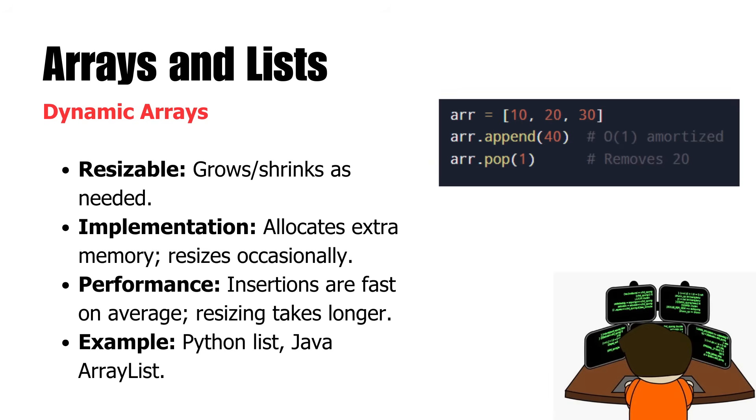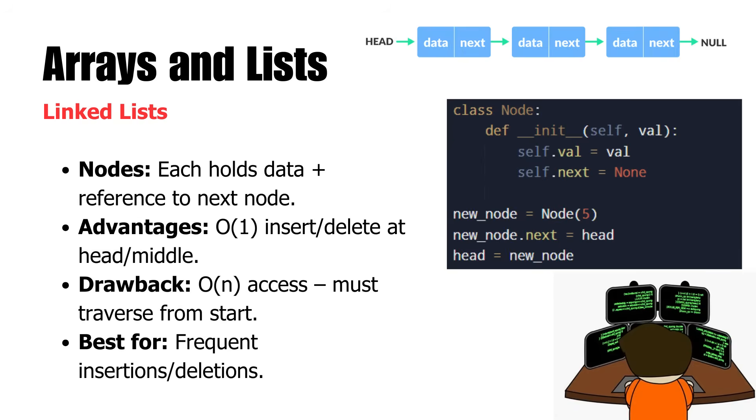Next up, linked lists. Linked lists are an alternative option. Instead of storing data in contiguous blocks of memory, they put it in independent nodes, which contain a value and a reference to another node.